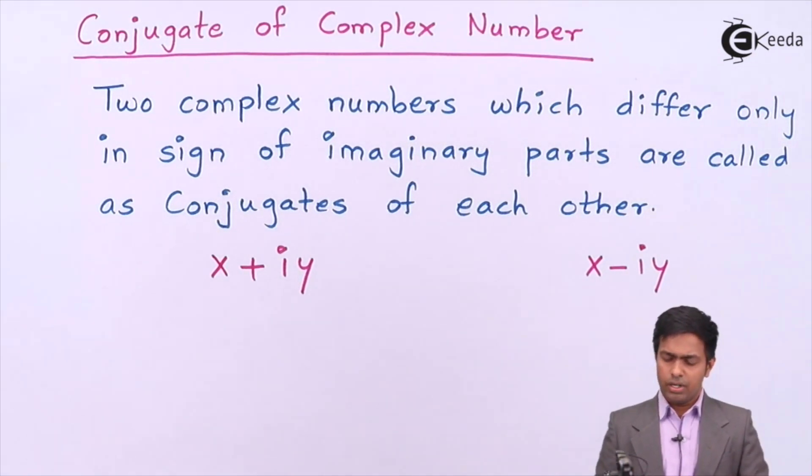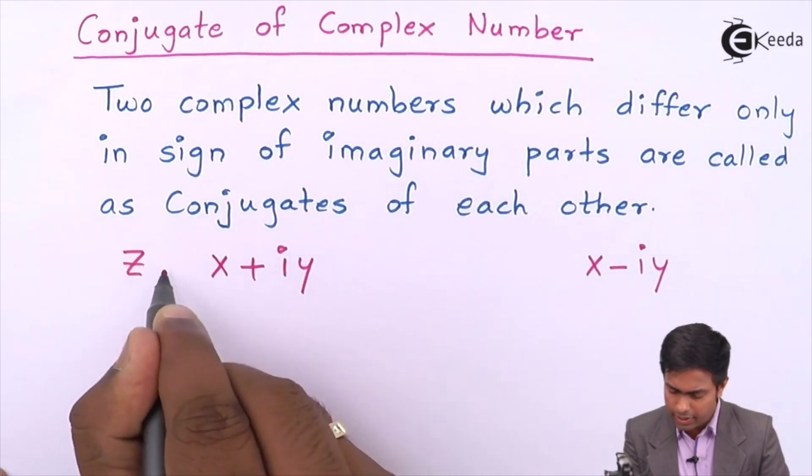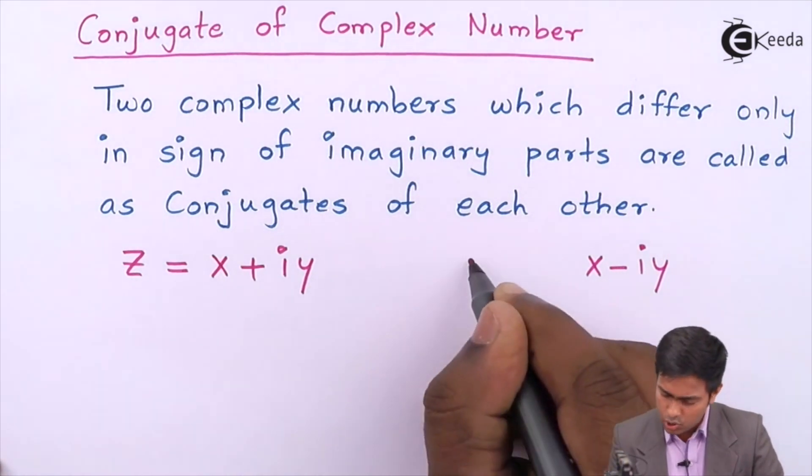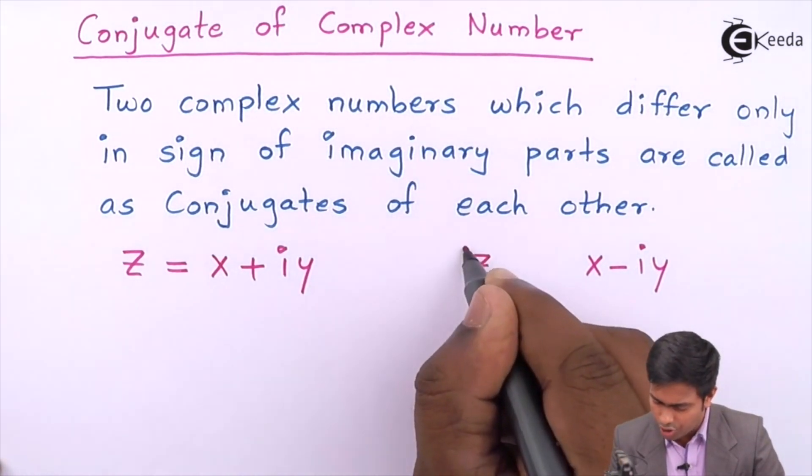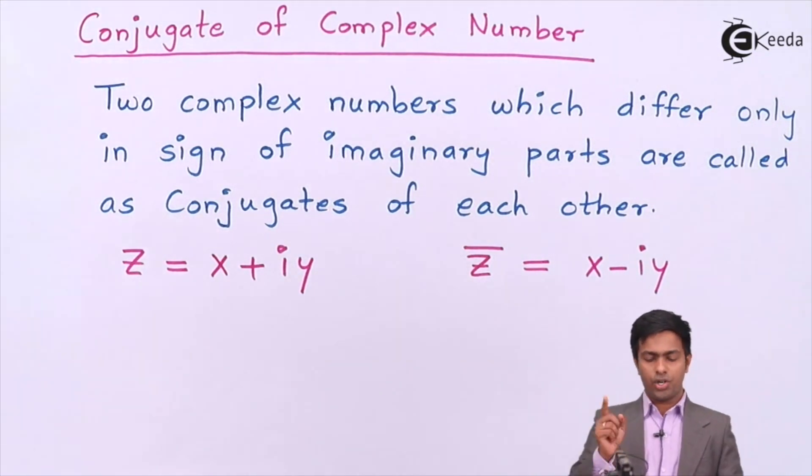In this case, these two numbers are called as conjugate of each other. If we say this complex number as z, then the conjugate of the complex number is generally denoted by z̄. We put one horizontal line above the symbol, so that horizontal line denotes bar. z̄ is nothing but the conjugate of z.